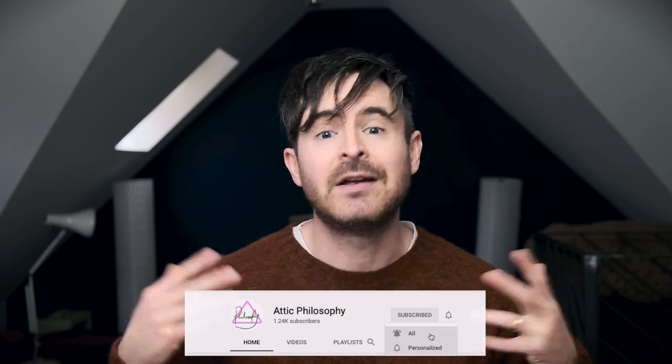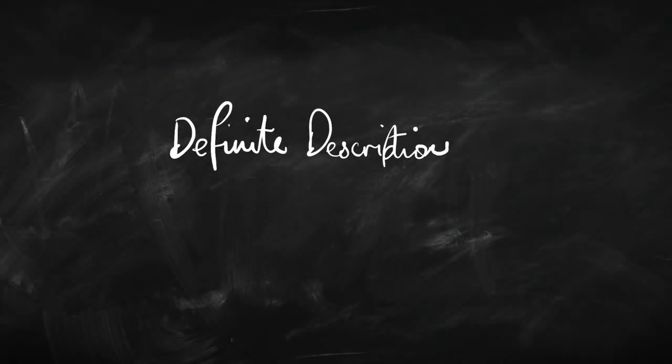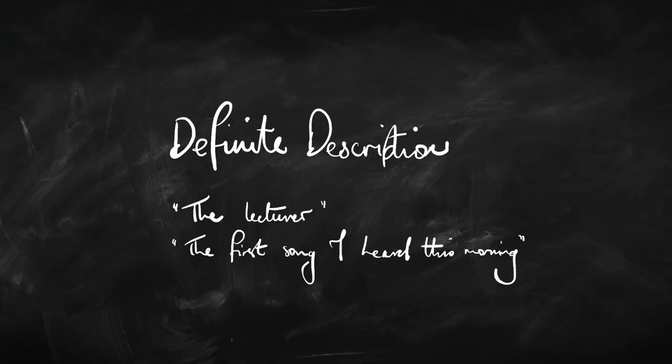If you're finding these Intro to Logic videos useful, why not subscribe to the channel and get all the updates? We're going to talk about definite descriptions — a phrase like 'the lecturer' or 'the first song I heard this morning,' which is intended to pick out a particular person or thing. We're going to look at how we can use identity in order to analyze definite descriptions, but before we do that, I want to take you through some philosophical issues to see why it's important to have this logical analysis. There is a genuine philosophical and linguistic problem here.